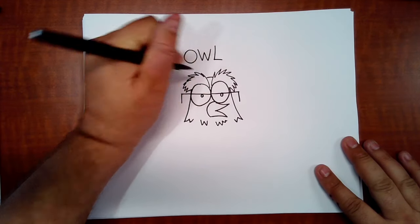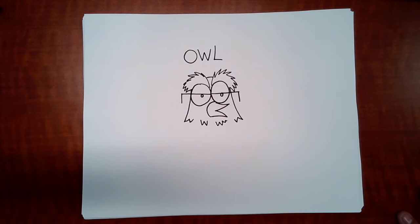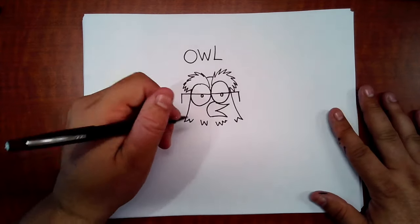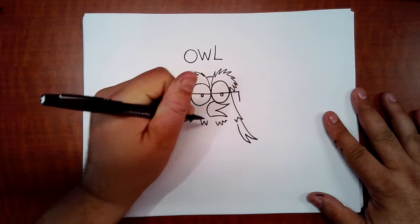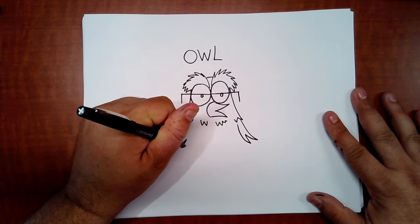Top of the head, just a little line connecting the eyebrows. Then we're going to add wings. Wings begins with letter W, so we're going to use letter W, W, W.